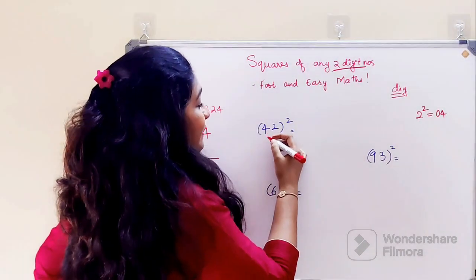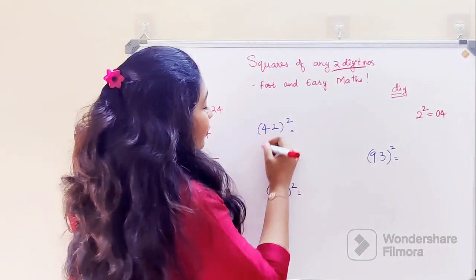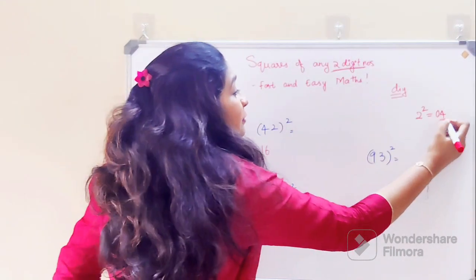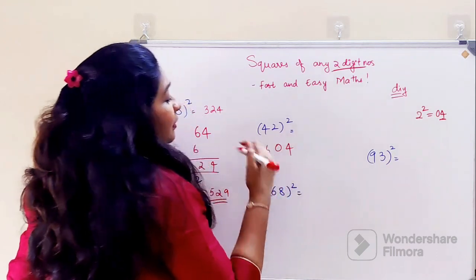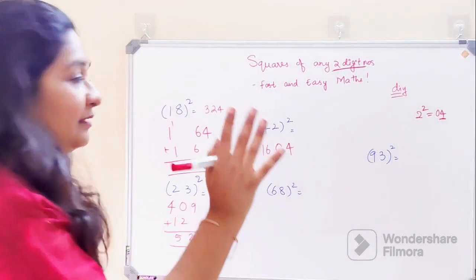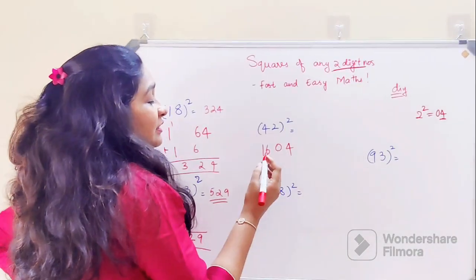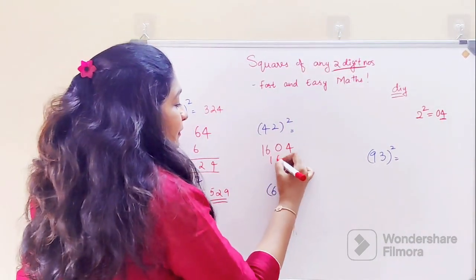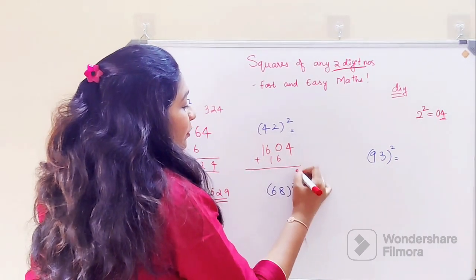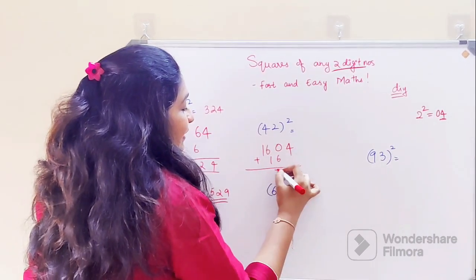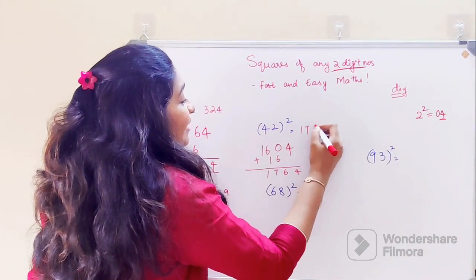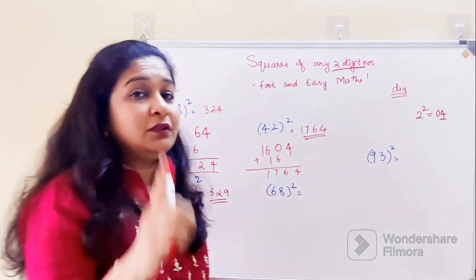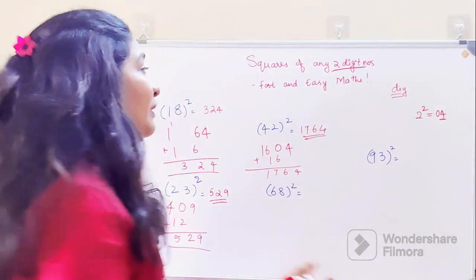Now what happens to 42 square? 4 square is 16. Again, 2 square you write in two-digit form, which is 04. Now just multiply all the digits: 4 into 2 is 8, 8 into 2 is 16. Add them: 4, then 6, 7, and 1. So 1764 is the answer for 42 square. Students, don't forget that at the end of this video I'm going to put up a DIY question whose answers you can mention in the comment section.